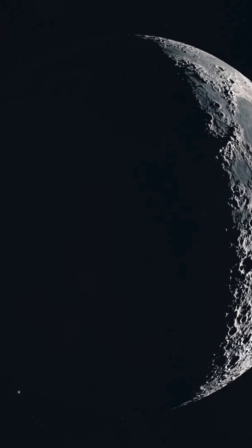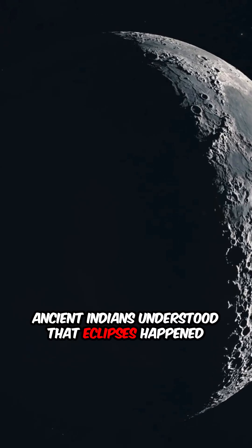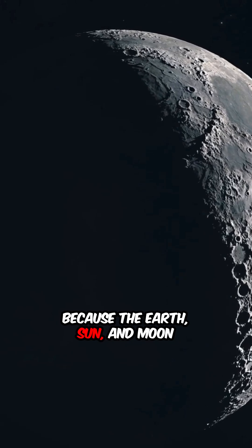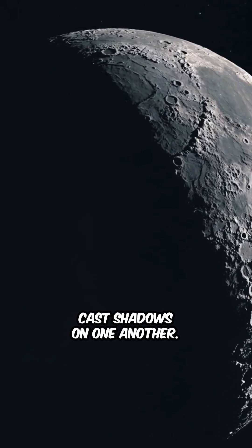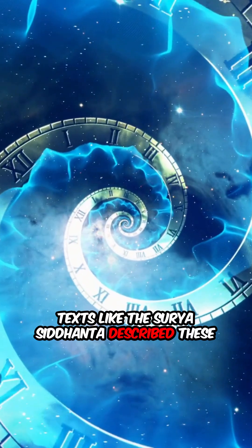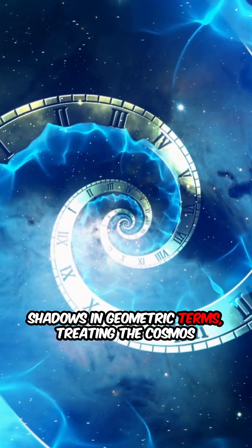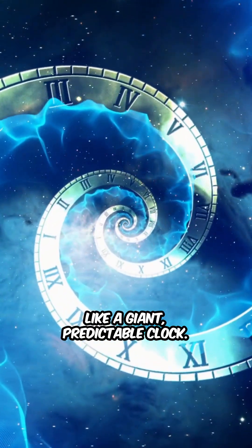So let's look at how they did it. Ancient Indians understood that eclipses happened because the earth, sun, and moon cast shadows on one another. Texts like the Surya Siddhanta described these shadows in geometric terms, treating the cosmos like a giant, predictable clock.